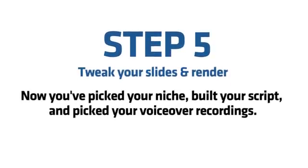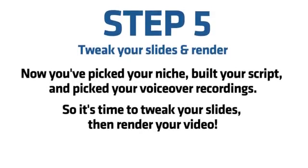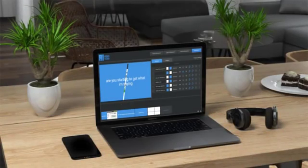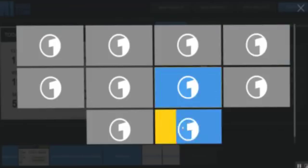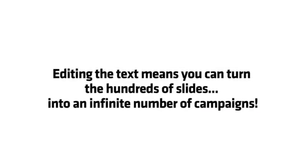Step 5: Tweak your slides and render. Now you've picked your niche, built your script, and picked your voiceover recordings, so it's time to tweak your slides and render your video. This is where our new Motion Graphics video editing engine comes in. With AI Video, you can add images and video to each slide, choose from 10 motion graphics animations for each slide, drag and drop slides to reorder them, change text and background colors for each slide, and easily edit the slide text.